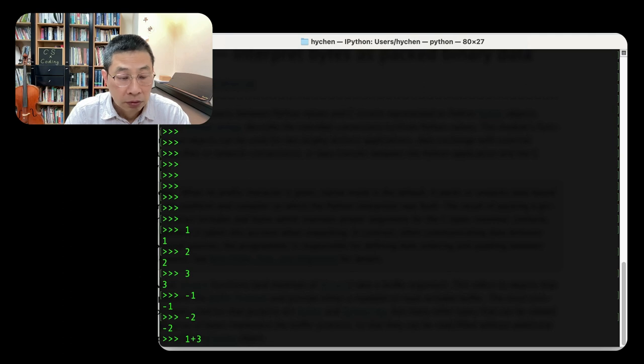So we do calculations, for example: 1 plus 3 minus 5, we get minus 1, right? So the integer values are quite interesting. How do we store those signed integers, signed numbers, in computer systems? This is a tricky question.